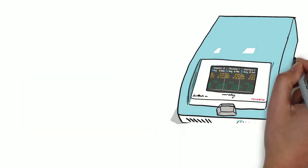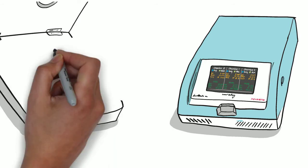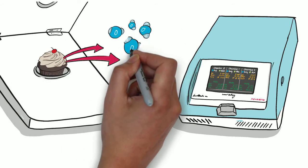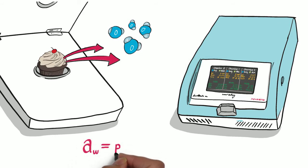Walter's Novasina Water Activity Meter is measuring the free water that can leave the product. It effectively detects this unbound water by measuring the equilibrium relative humidity over the surface. This value is then converted into a water activity measurement.